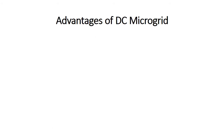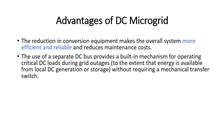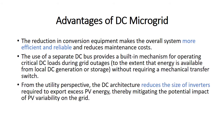Advantages of DC microgrid: first, the reduction in conversion equipment makes the overall system more efficient and reliable and reduces maintenance cost. The use of a separate DC bus provides a built-in mechanism for operating critical DC loads during grid outages without requiring a mechanical transfer switch. From the utility perspective, the DC architecture reduces the size of inverters required to export excess PV energy, thereby mitigating the potential impact of PV variability on the grid.